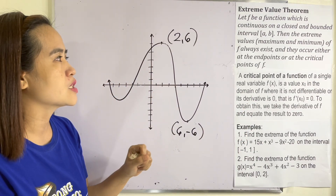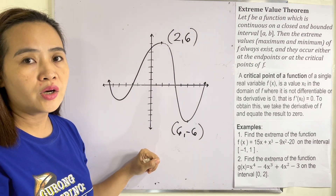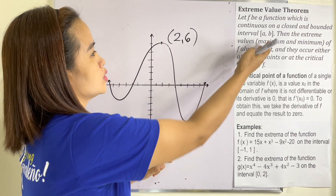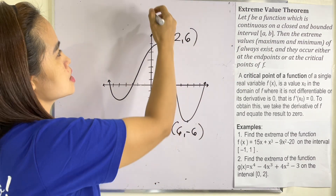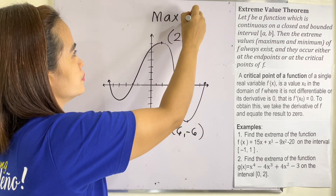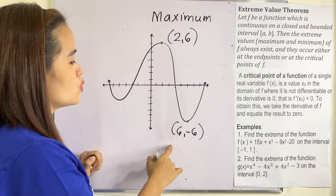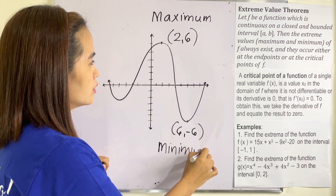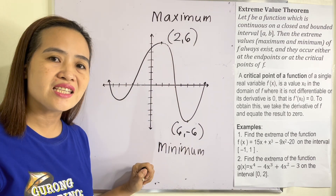Let's take a look at this graph and identify the extreme values — the maximum and minimum. Here, we have the point (2, 6), which is the maximum value, and the minimum value occurs at the point with a negative Y value.